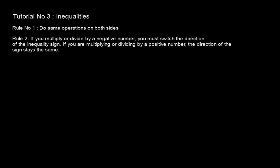Rule number 1 is: do the same operations on both sides. Rule number 2 says if you multiply or divide by a negative number, you must switch the direction of the inequality sign. If you are multiplying or dividing by a positive number, as we did in our last example, the direction of the sign stays the same.